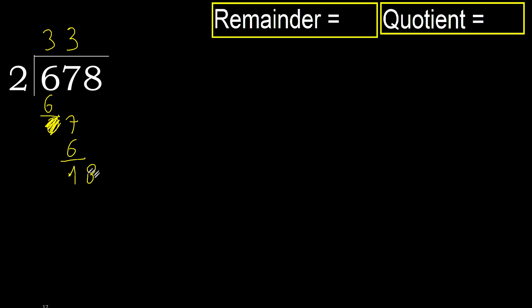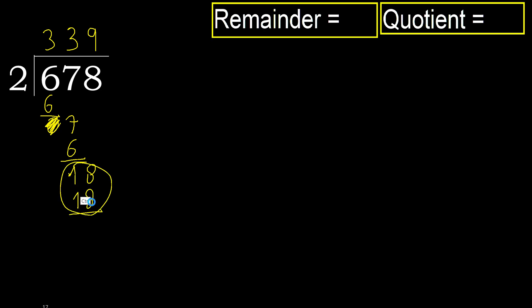18. 2 multiplied by 9 is 18. OK, 18 is not greater — subtract. Next.